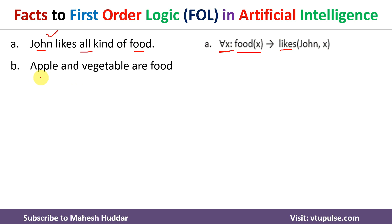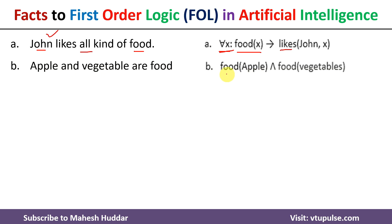The second fact is: apple and vegetables are food. So apple is a food and vegetable is a food. Since the specific values are directly given, we don't use a variable like X. We simply write food(Apple) and food(Vegetable).